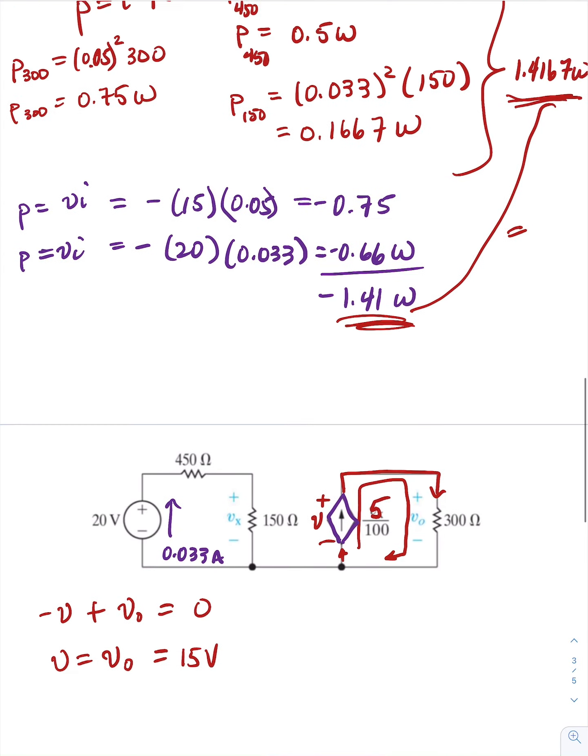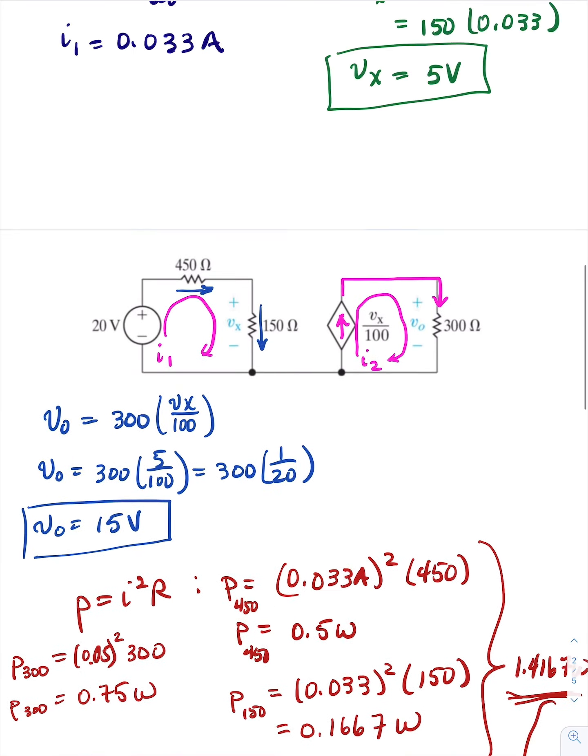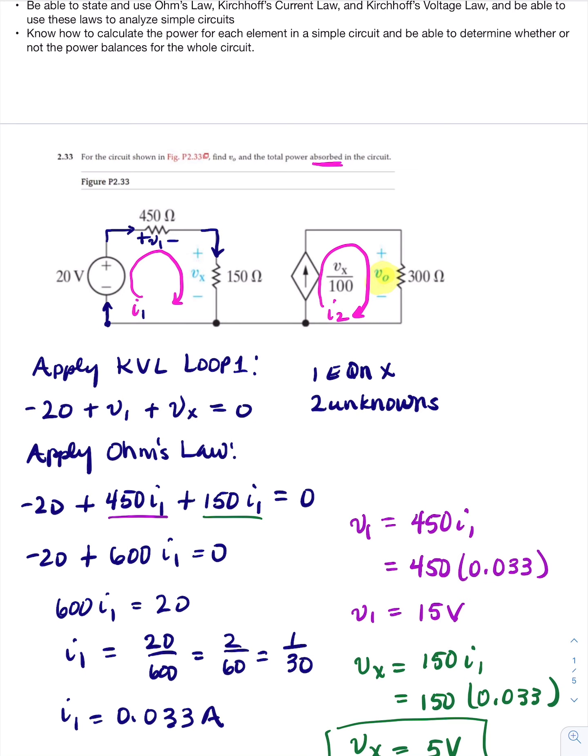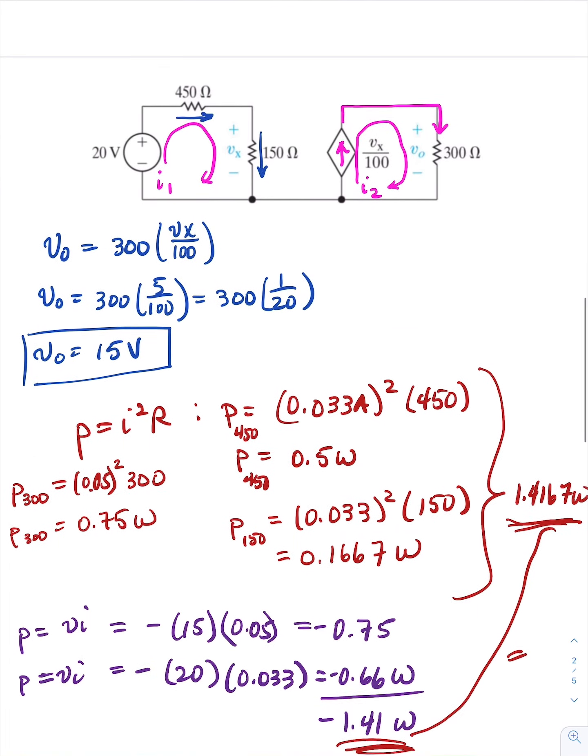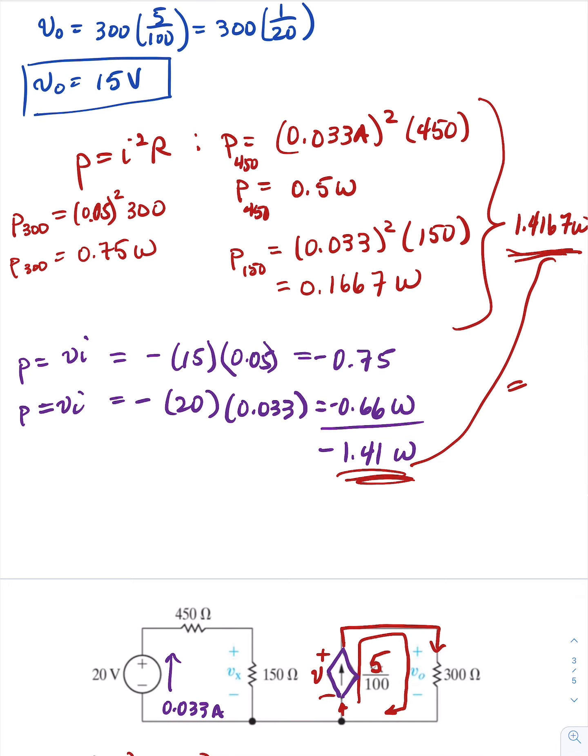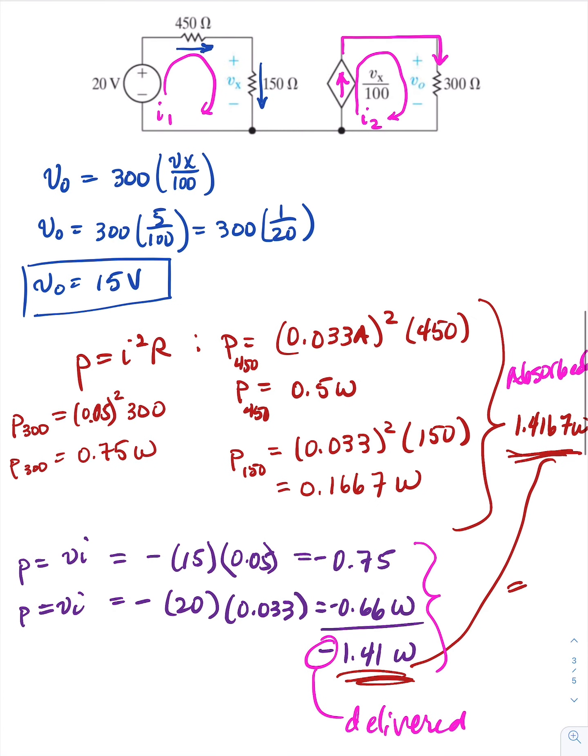We are finished with this problem. We found the power in all the circuit elements, power absorbed in the circuit. Power absorbed would be the resistors, but we also found the power delivered. And we found the voltage across the load resistor, V sub zero. Thank you.